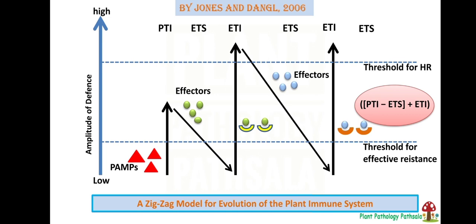This is a very important model for plant-pathogen interaction. By this, you can have a clear idea about how plant and pathogen interaction is going on continuously at the genetic level. To understand this zigzag model, we must have an idea about some important terminologies.